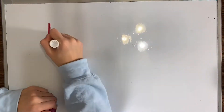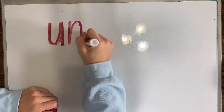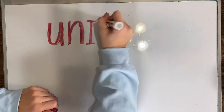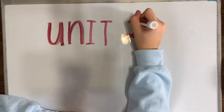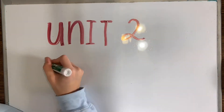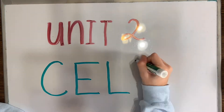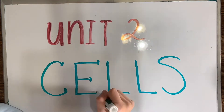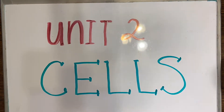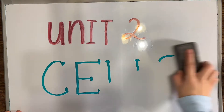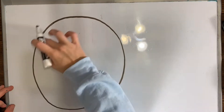Hey, welcome to my unit two review. This will be covering chapters four and five in the textbook and will be all about cells and their functions. Every living thing on earth is made up of cells.